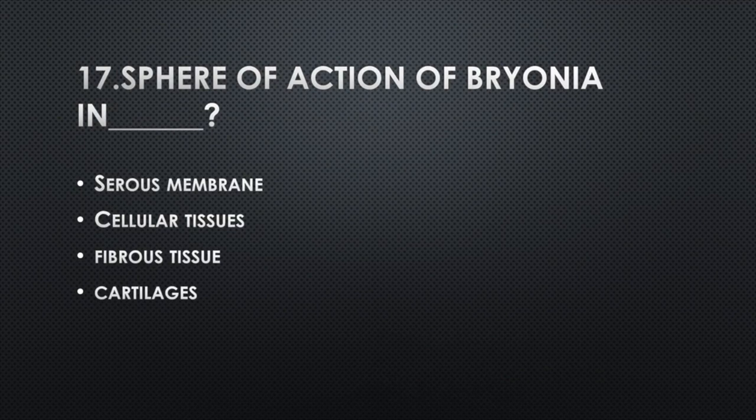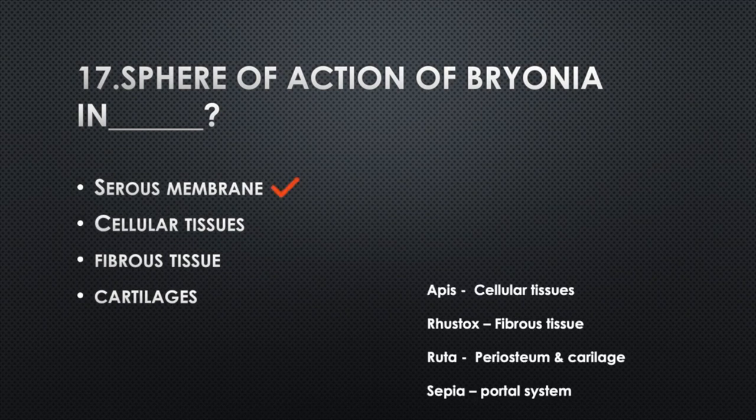Sphere of action of Bryonia — Option A: Serous membrane, Option B: Cellular tissues, Option C: Fibrous tissue, Option D: Cartilages. Answer: Option A, Serous membrane. Apis: cellular tissues. Rhus tox: fibrous tissue. Ruta: periosteum and cartilage. Sepia: portal system.